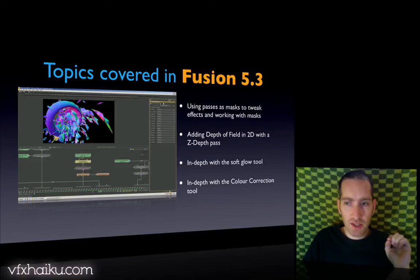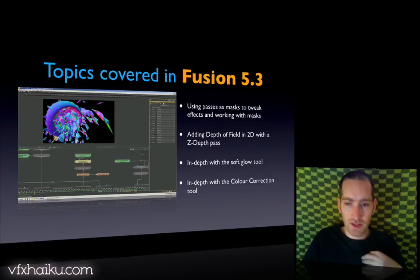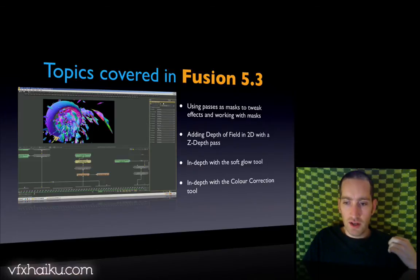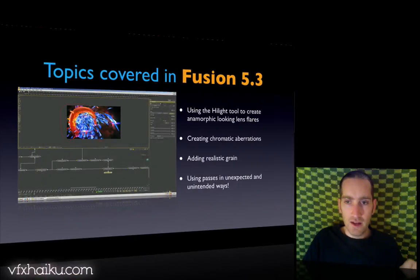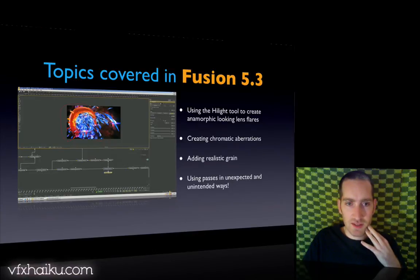We spend a lot of time talking about using Z-depth passes in 2D to generate depth of field rather than rendering that inside of 3D. We spend a lot of time on the soft glow tool — one of my personal favorites that I use in pretty much every comp I create — it's really good for generating atmospheric effects. We cover color correction in depth, the highlight tool for generating anamorphic-looking lens flares, chromatic aberrations, adding realistic grain, and using passes in unexpected ways to see what you can get out of them.